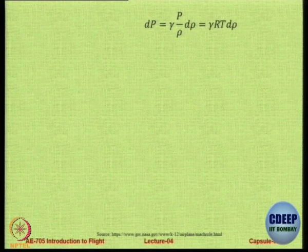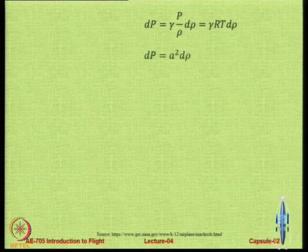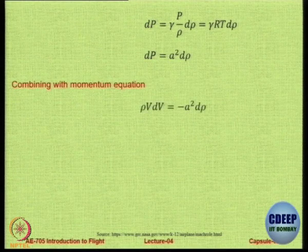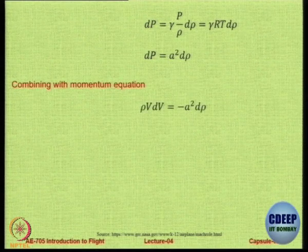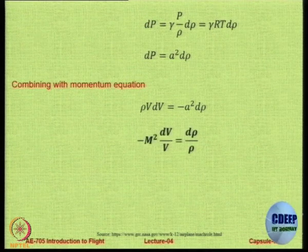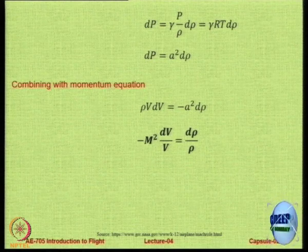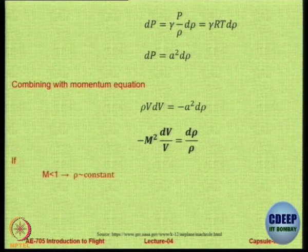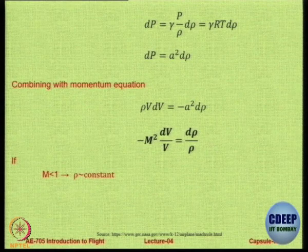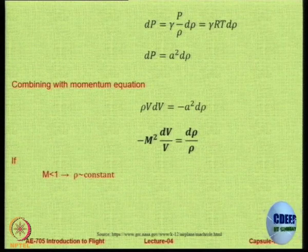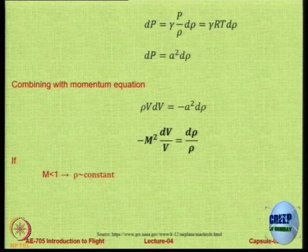So dP is A² dρ, and combining with the momentum equation where ρV dV equals minus dP, we get ρV dV equals minus A² dρ. From that you can get M² dV/V equals dρ/ρ. This is not to be derived or memorized — this is just to show you the link that Mach number gives us between velocity and density. That is the whole purpose of this derivation. Mach number is a link.